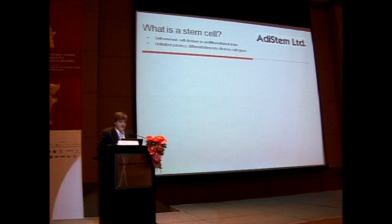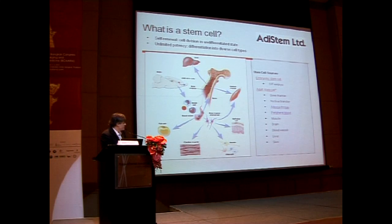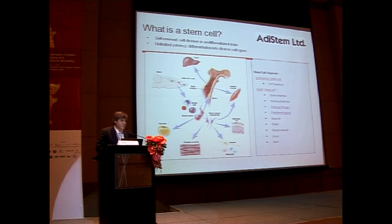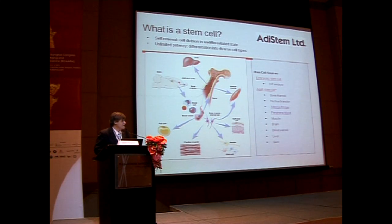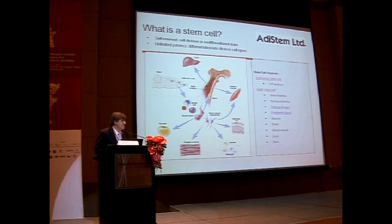Before I get into that, I'll try not to talk too much about stem cells — some of you probably know about it more than I do. So basically, what is a stem cell? A stem cell is a cell that can self-renew and has some form of potency. An embryonic stem cell, for example, is totipotent — it can turn into just about every tissue. Adult stem cells have limited potency, so they're called multipotent.